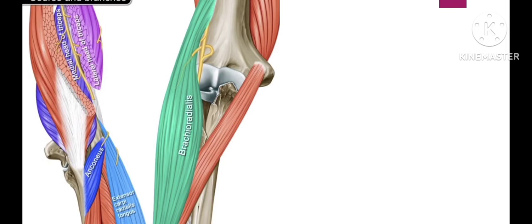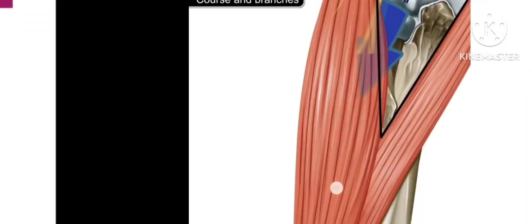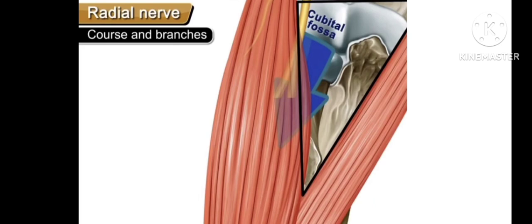The muscle attaches to the radius bone — that is why it is called extensor carpi radialis longus. This is the cubital fossa.